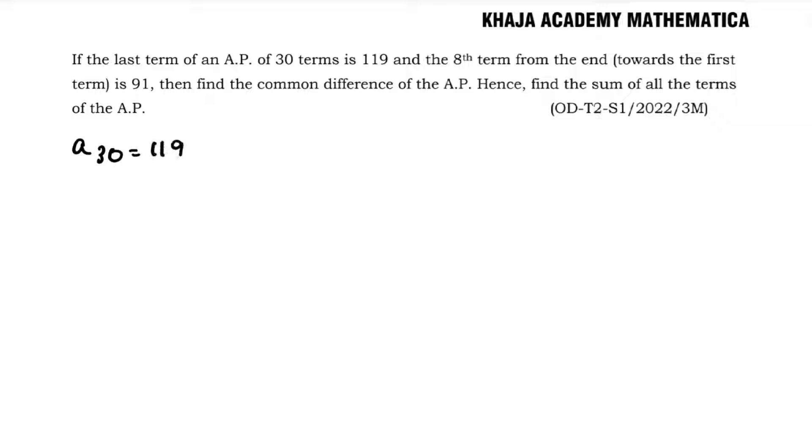And the 8th term from the end—from the end, the 8th term will be, since there are 30 total terms, 30 minus 8 plus 1, so the 23rd term. So a23, this is 22 plus 1, so the 23rd term.